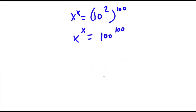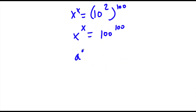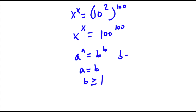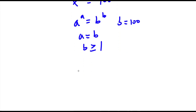Now if I have something in the form a to the power of a is equal to b to the power of b, then this means that a is equal to b, as long as b is greater than or equal to 1. In this case b is equal to 100, which is greater than or equal to 1, meaning x is equal to 100.